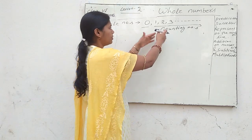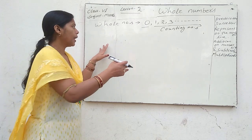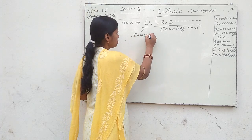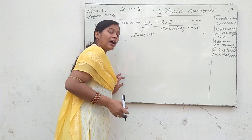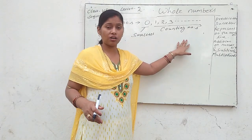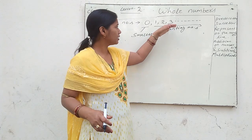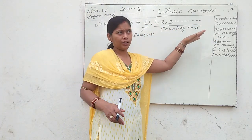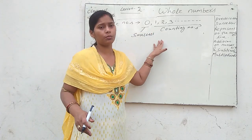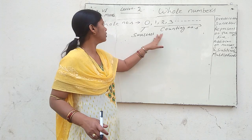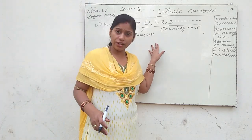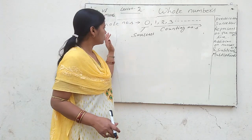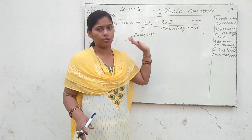Counting numbers together with 0 are called whole numbers. 0 is the smallest whole number. There is no largest whole number because whole numbers extend to infinity — every number has its successor, so there is no greatest whole number.